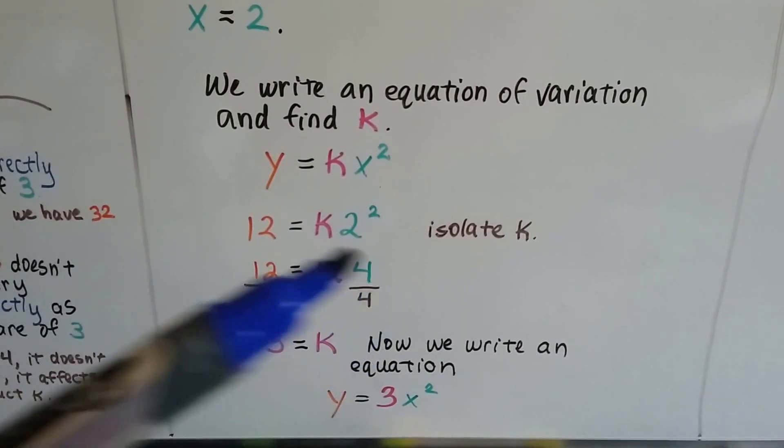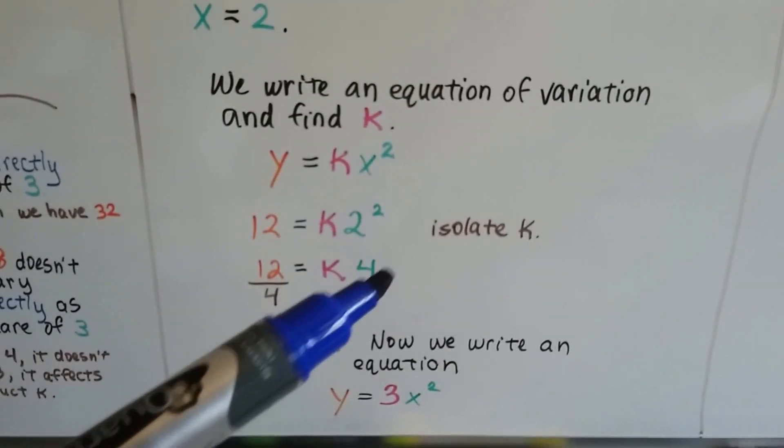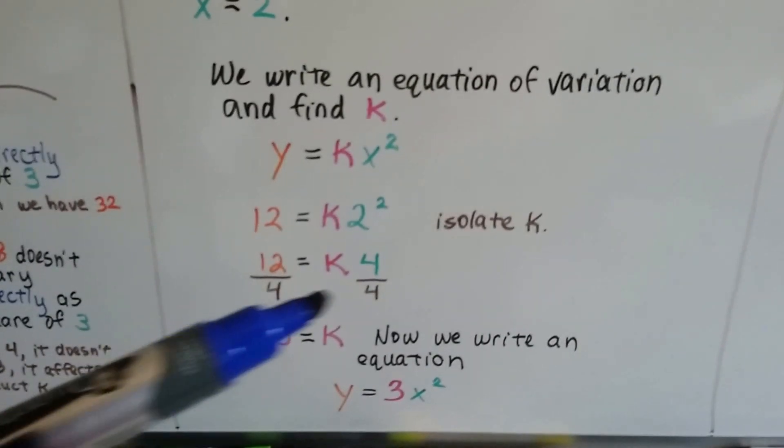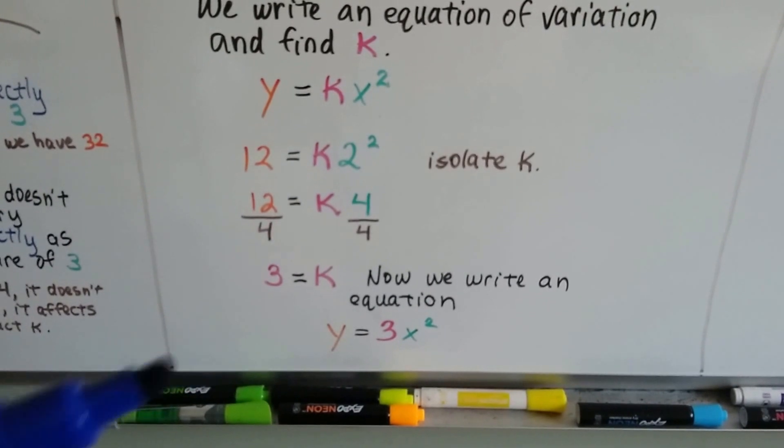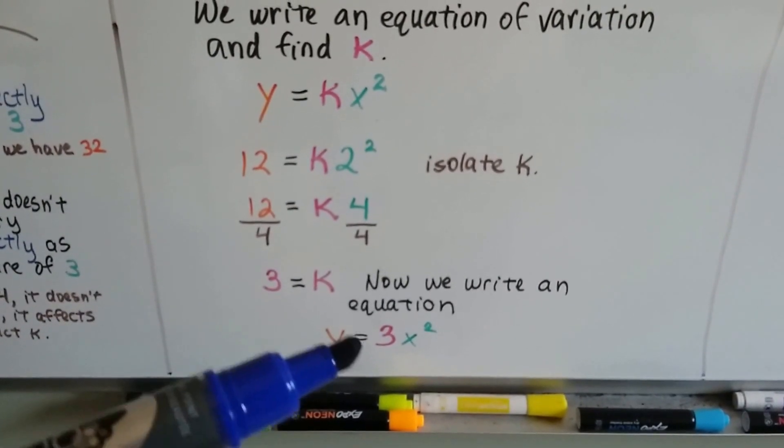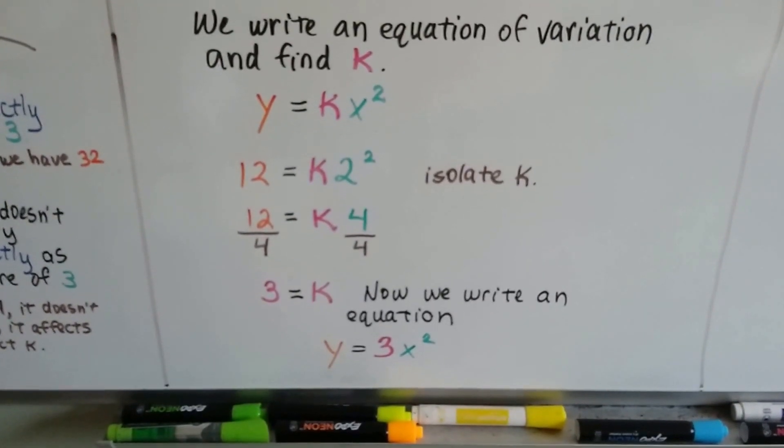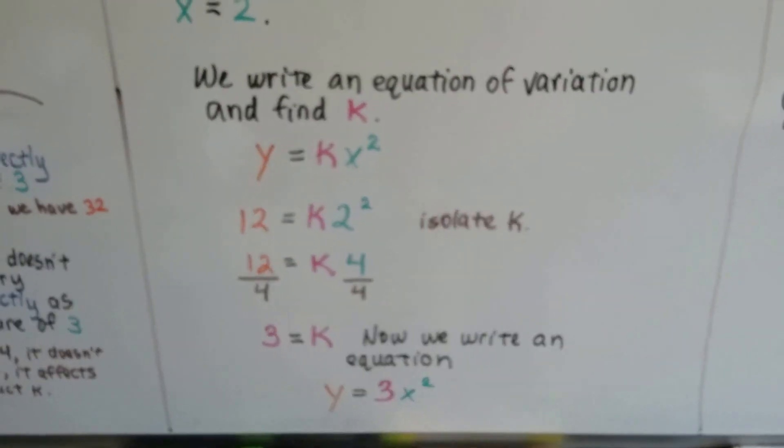We could also multiply each side by the reciprocal of 4, 1 fourth, and we'd get that 3. I just think it's easier to divide when there's no fractions. So now we write an equation. We have y equals 3x squared, and we did it. We found our equation of variation.